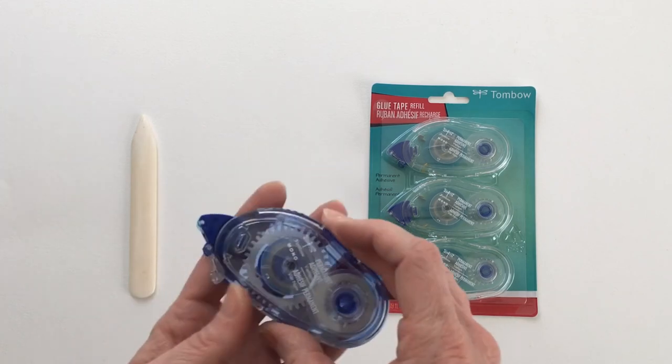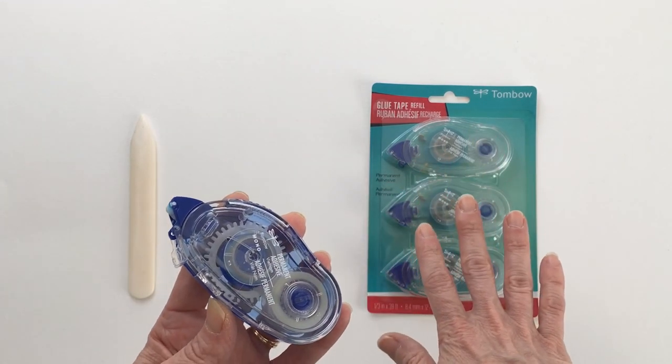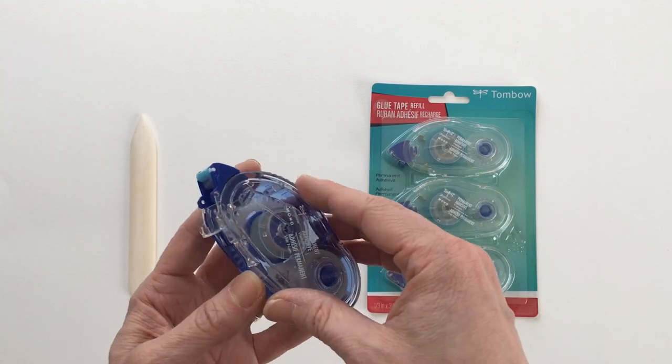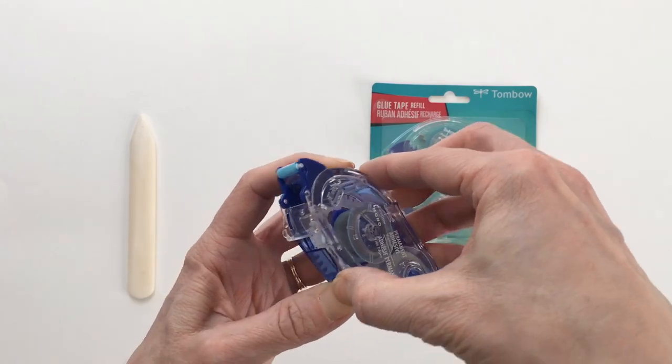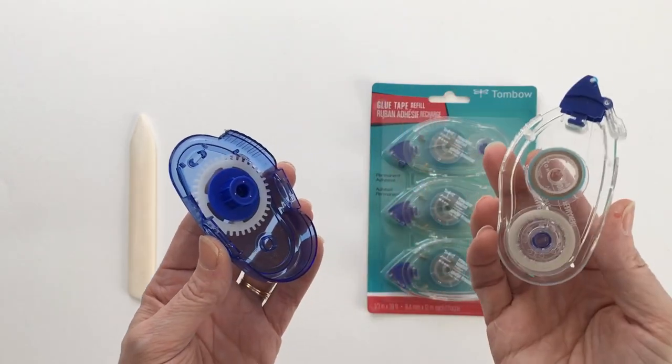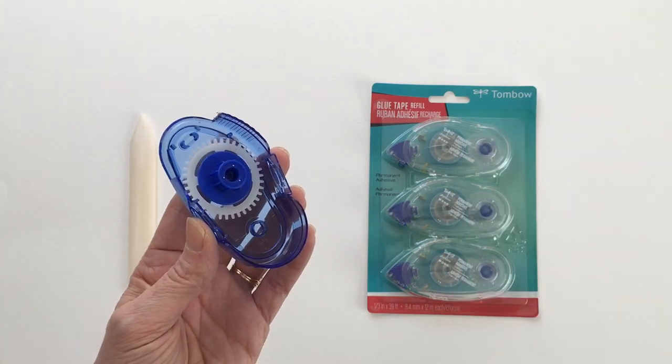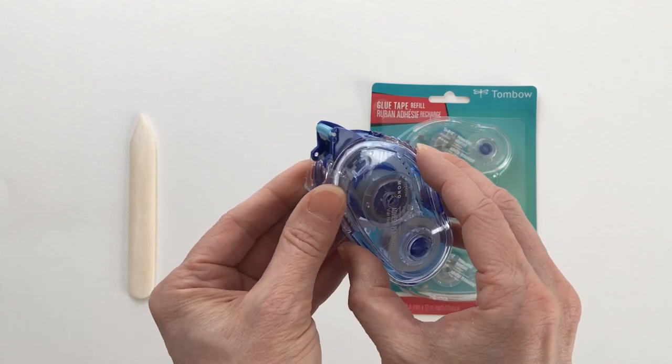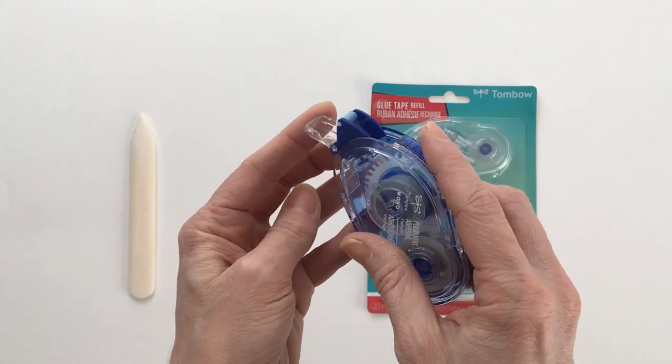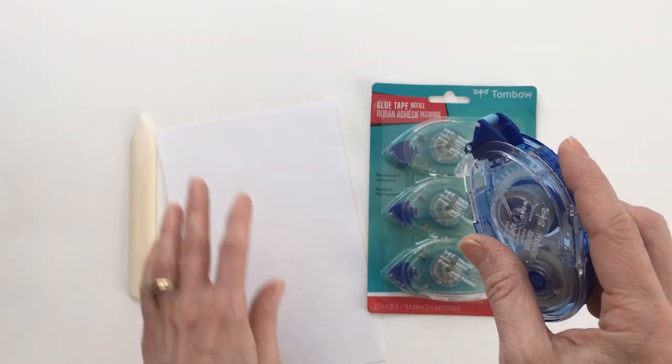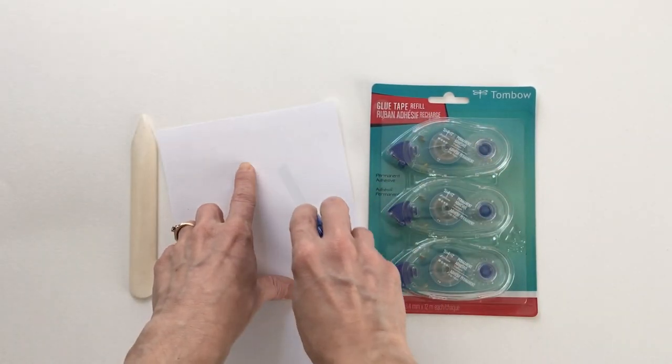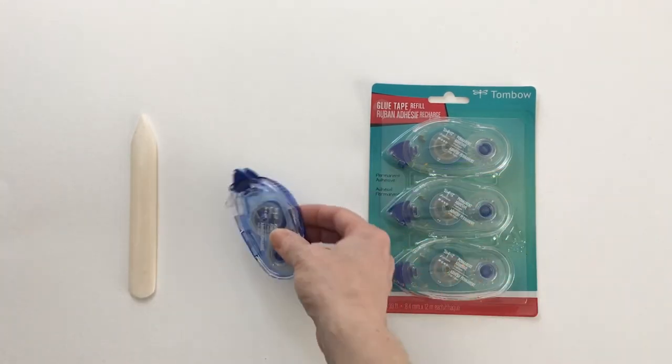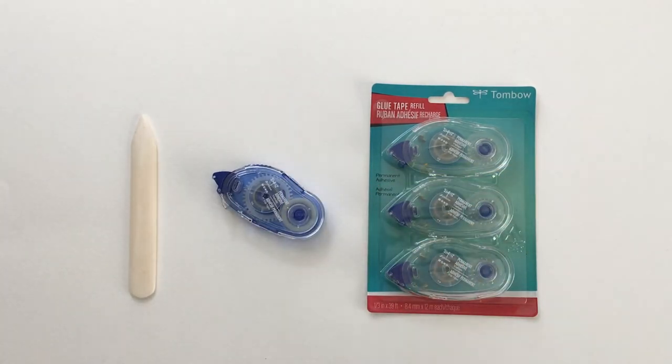And then we have tape runners. This is the applicator, and these are the refills. You can also get these online or at Michael's or any craft supply store. This is how they go together. I'm going to show you real quick because they can be a little confusing. This is the refill. When it is used up, you throw this part away, you keep this part, and you get one of these and you put another one on just like this. There's a little door here at the bottom. So you hold it like this, take a piece of whatever you're working on, and you just run it like that. And it's really quick and easy. And these are really good for using on envelope liners. So those are the basic tools that most orders will probably use.